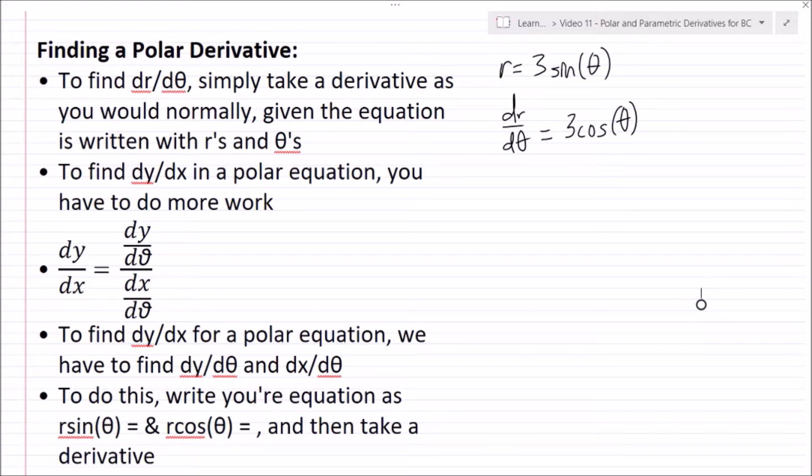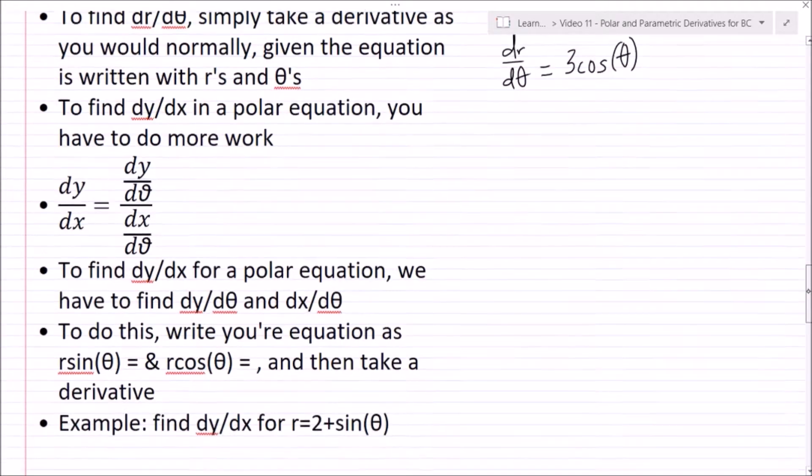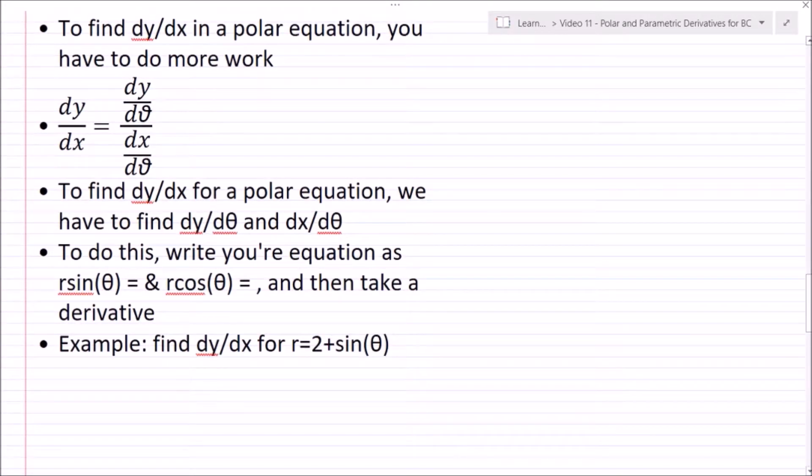Well, it's very similar to a parametric: dy/dx equals dy/dθ over dx/dθ. But here, it's a little harder to see how we're going to get dy/dθ and dx/dθ. So to do this, you're going to want to write your equation as r sin(θ) equals and r cos(θ) equals. And you'll notice that this is just y equals and x equals. And then you can take a derivative where you'll get dy/dθ and dx/dθ.